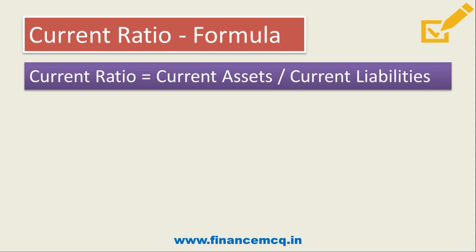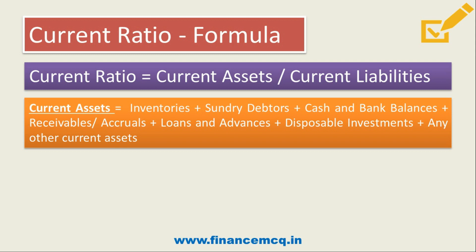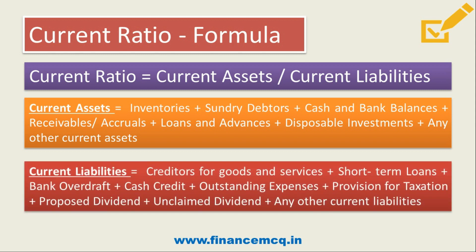The formula for current ratio is current assets divided by current liabilities. Current assets consist of inventory, sundry debtors, cash and bank balances, receivables or accruals, loans and advances, disposable investments, and any other current assets. Current liabilities consist of sundry creditors for goods and services, short-term loans, bank overdraft, cash credit, outstanding expenses, provision for taxation, proposed dividend, unclaimed dividend, and any other liabilities. The ideal current ratio is 2:1.